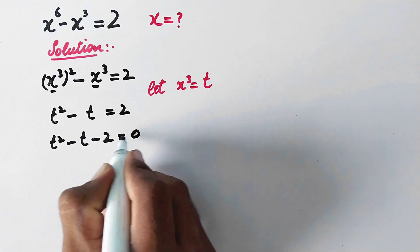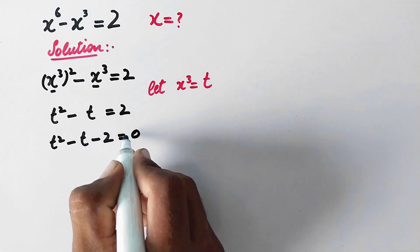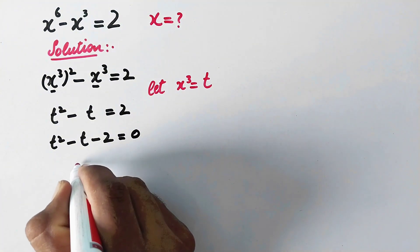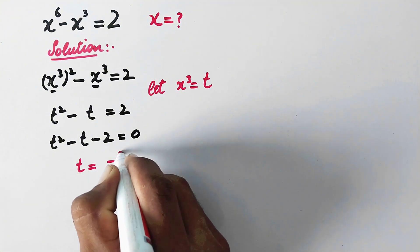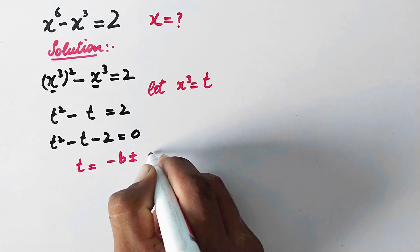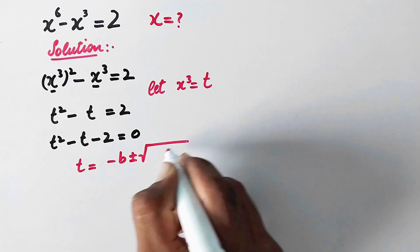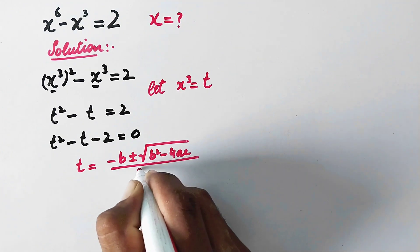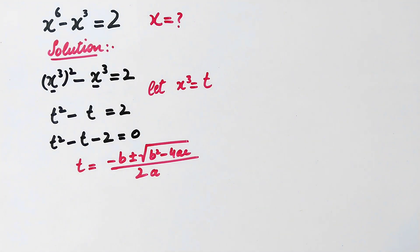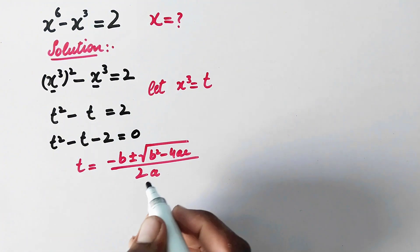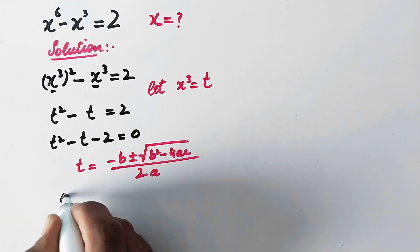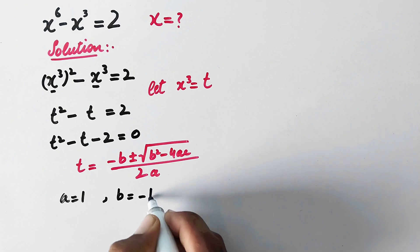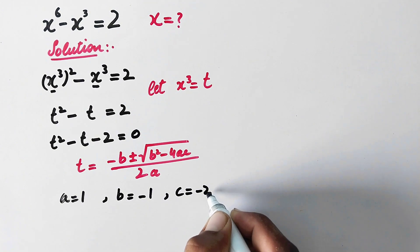Now we have a quadratic equation, so we will follow the quadratic formula to solve it. The formula is t equals minus b plus or minus square root of b squared minus 4ac, divided by 2a. Putting in the values: a is 1, b is minus 1, and c is minus 2.